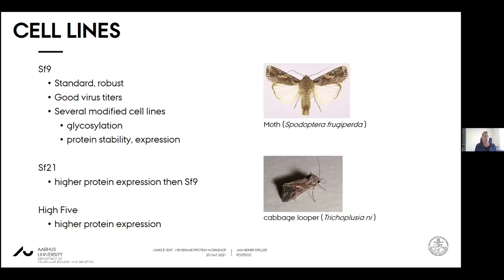There are different cell lines available. The most commonly used is SF9, derived from moth larvae, and you also have SF21 cells, also derived from moth larvae, which seem to yield some higher protein levels. SF9 cells are most robust for keeping in culture and generate a very good virus titer especially in the beginning. Another cell line is High Five, which normally expresses higher amounts of protein, though it depends on your gene of interest. I would recommend testing several cell lines, normally starting with SF9 and then moving to others to see if you can boost expression levels.